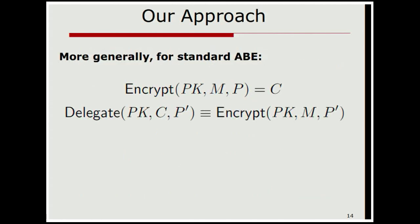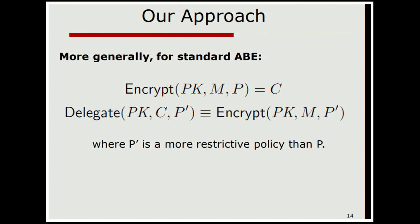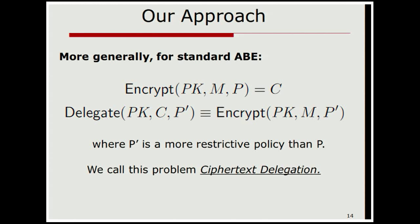Stepping back more generally, what we're really asking for is an ABE scheme where if I encrypt under policy P, there is a public procedure — it only needs the public key — that takes the ciphertext and a more restrictive policy P' than P, and converts the ciphertext under policy P to a ciphertext under a more restrictive policy P'. The time constraint is a special case of such a policy. By moving up the time, we're making it more restrictive. This is the problem we call ciphertext delegation — similar to key delegation but on the ciphertext side.